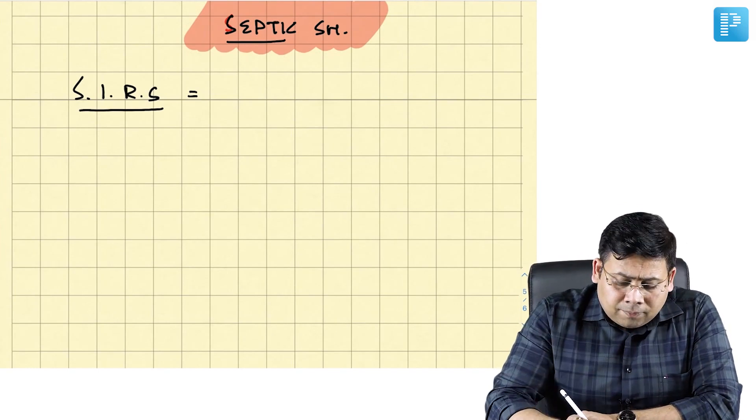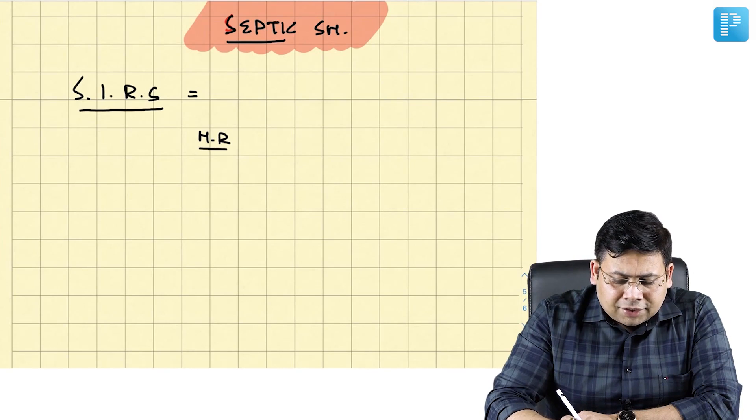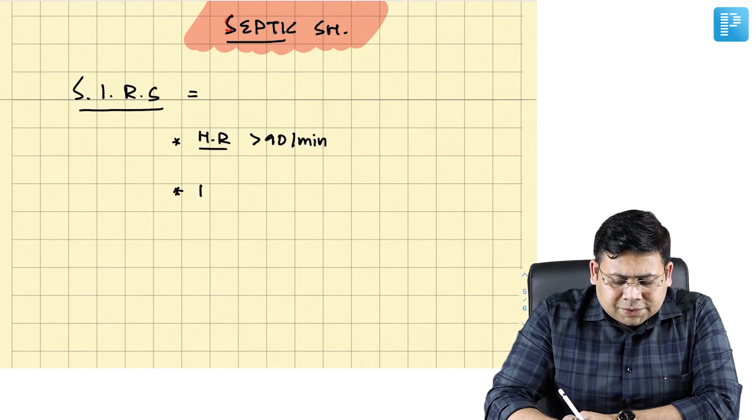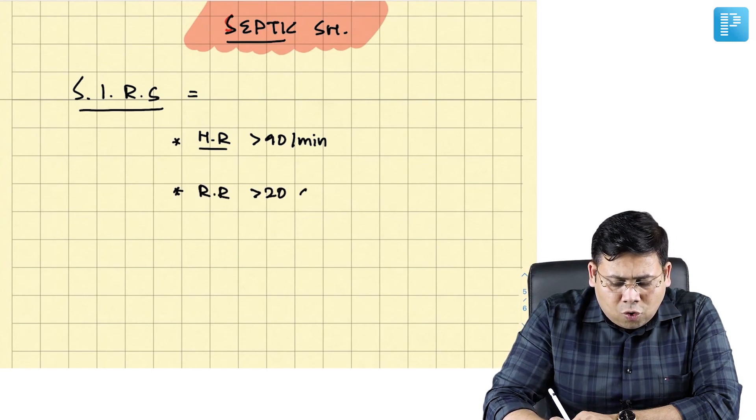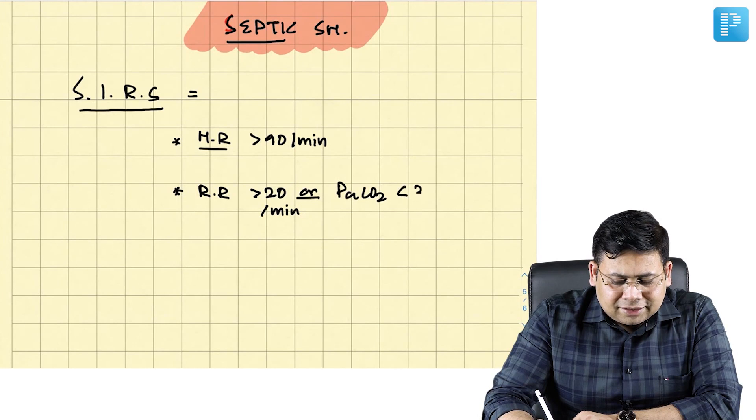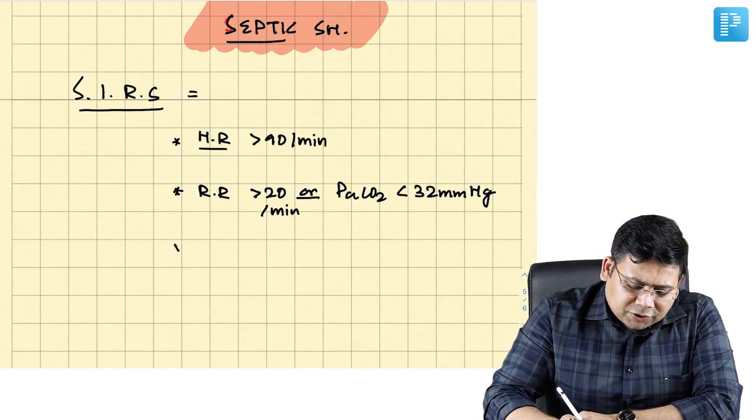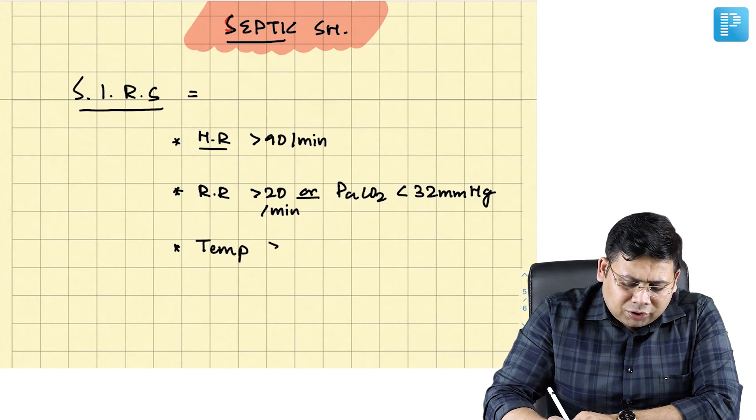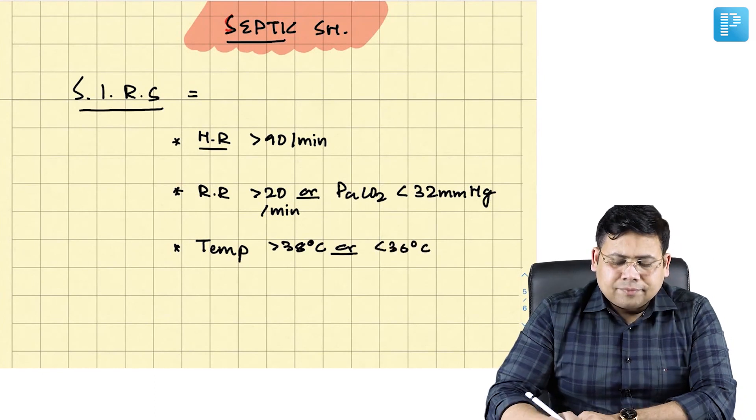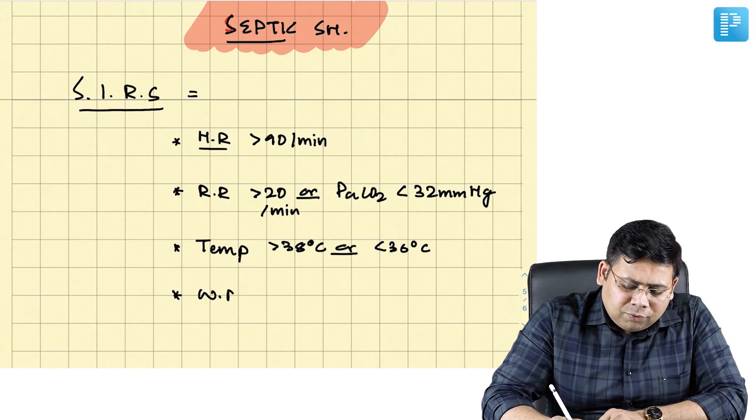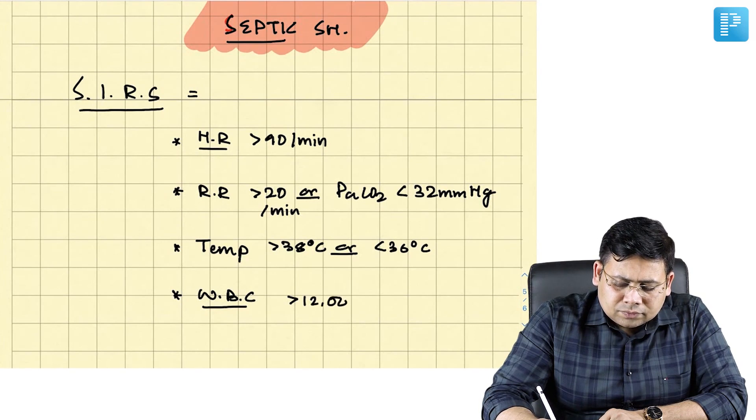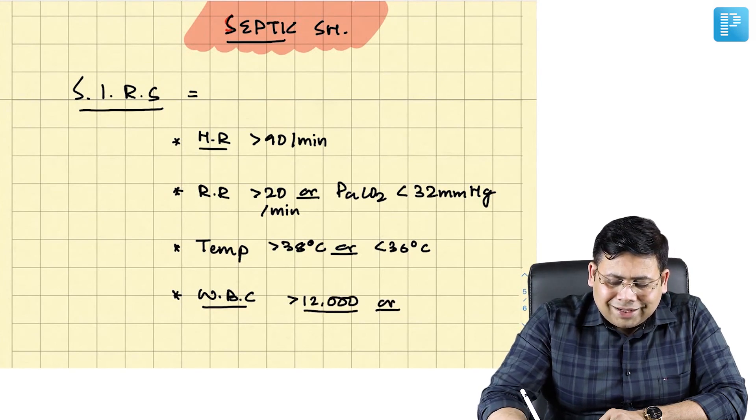SIRS is defined by four parameters. Heart rate more than 90 beats per minute. Respiratory rate more than 20 per minute or PaCO2 less than 32 mmHg. Temperature of the body more than 38 degrees centigrade or less than 36 degrees centigrade. WBC count more than 12,000 or less than 4,000.